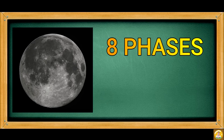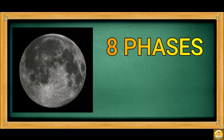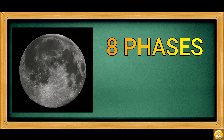The moon has eight phases — four primary phases and four intermediate phases. The moon goes through these eight phases in twenty-nine and a half days. The period it takes for the moon to complete the phases is called a month.